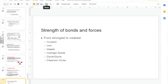The strength of bonds and forces from strongest to weakest: covalent, then ionic, then metallic, hydrogen bonds, dipole-dipole, and dispersion forces, with covalent being the strongest and London dispersion forces being the weakest.